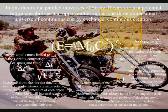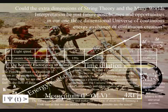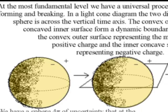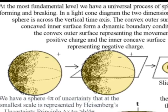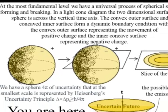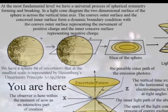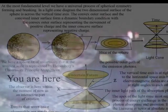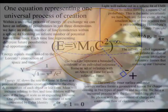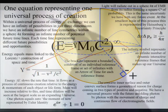In such a theory, the parallel universes of string theory are just future possibilities and opportunities in our one three-dimensional universe of continuous energy exchange — continuous creation. In my other videos, I explain that at the most fundamental level, this is a process of symmetry forming and breaking, that forms greater degrees of freedom for entropy or disorganization, and also greater degrees of freedom for the diversity and complexity of life, with the whole theory being explained by just one equation representing the dynamic geometry of this process.